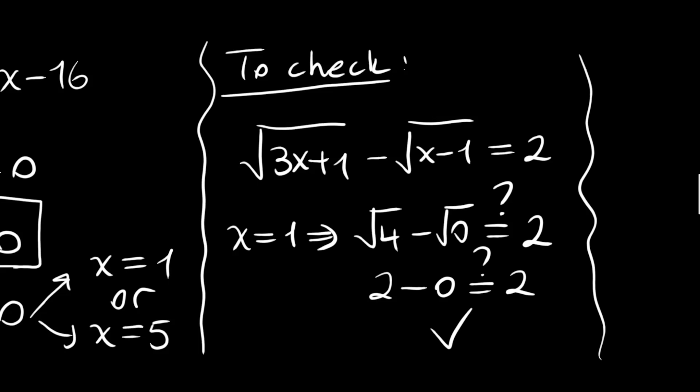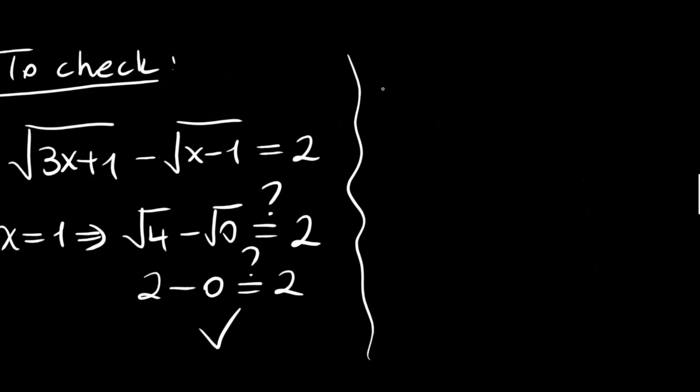And our second candidate was x is equal to 5. We have root 16 minus root 4. And this is 4 minus 2, that is also correct.